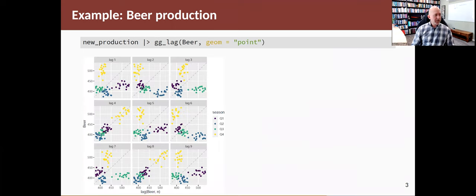The function we're talking about in this section is gg_lag. If I take my data set and pipe it into the gg_lag function and tell it that I'm interested in the beer column, the beer variable, and for now I'm going to set the geom to be equal to point because it's a little easier to understand the function using this form first. You'll see it produces this set of scatter plots.